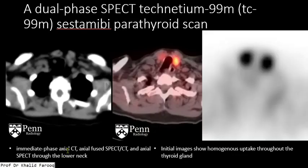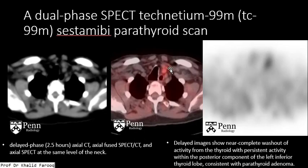On immediate images taken after injecting sestamibi, there is homogenous tracer uptake in both lobes of the thyroid gland, while on delayed images radioactivity is noted in the parathyroid adenoma. This is because of the high concentration of mitochondria-rich oxyphil cells in parathyroid adenoma.